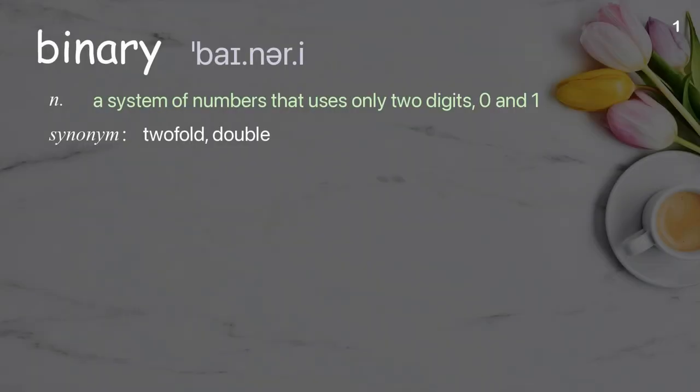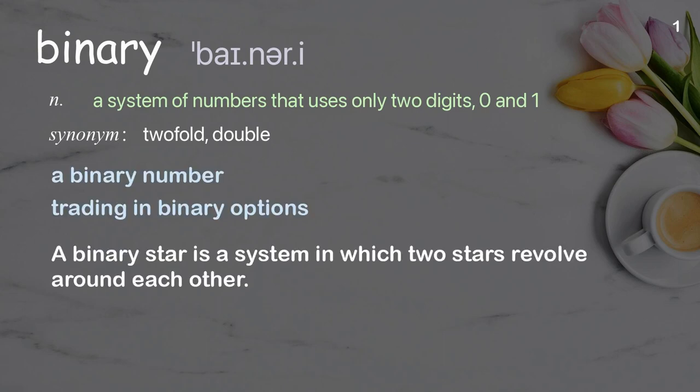Binary. A system of numbers that uses only two digits, zero and one. Examples: a binary number, trading in binary options. A binary star is a system in which two stars revolve around each other.